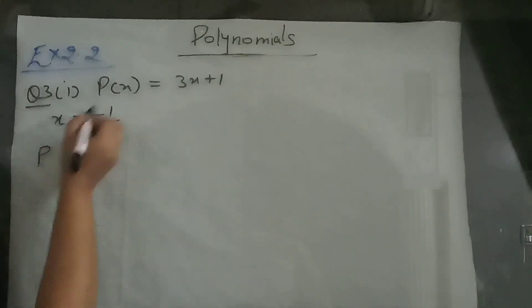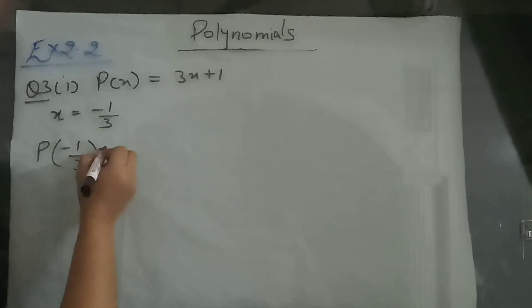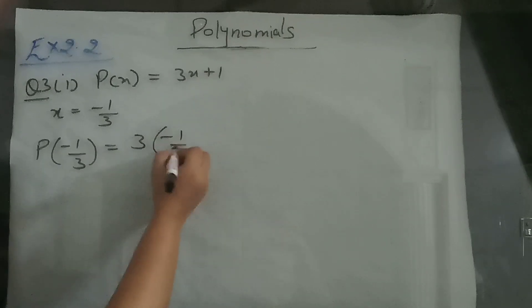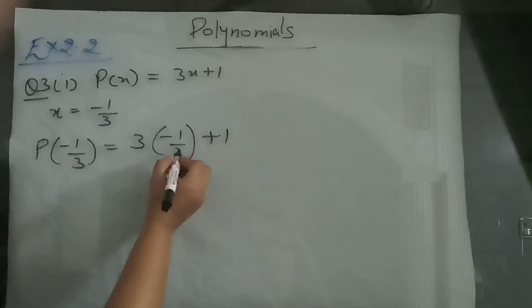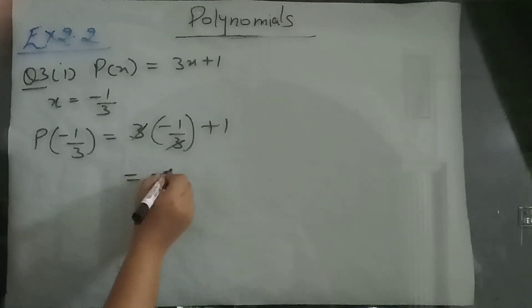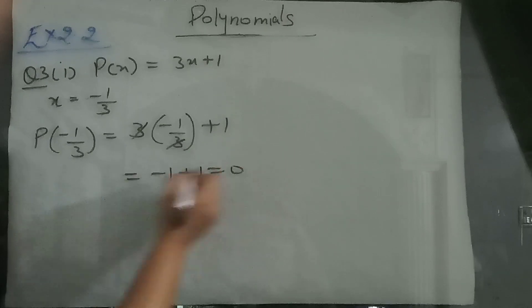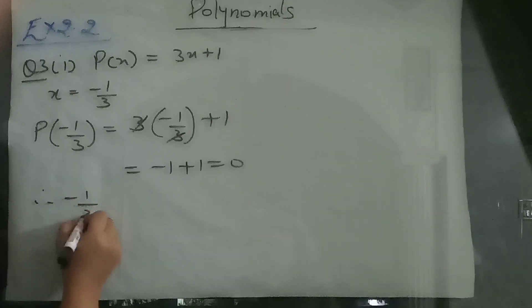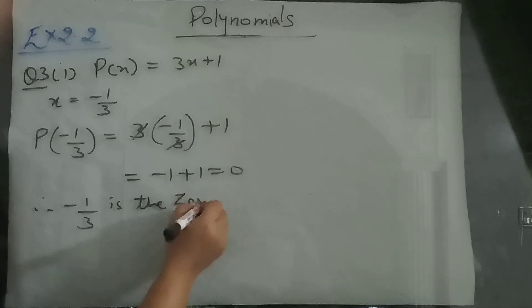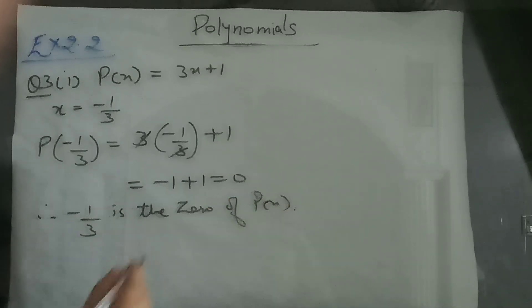So put minus 1 by 3 in place of x. You get 3 into minus 1 by 3 plus 1. 3 and 3 got cancelled, you are left with minus 1 plus 1, it is 0. Therefore, minus 1 by 3 is the zero of the polynomial p(x).